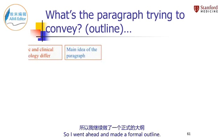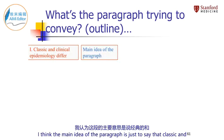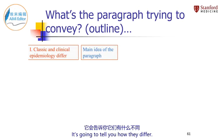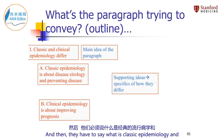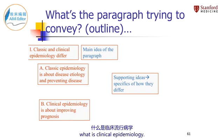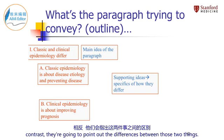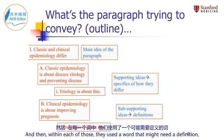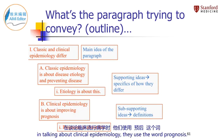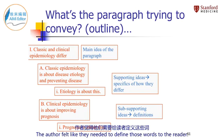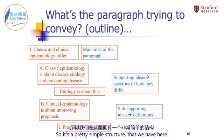I went ahead and made a formal outline. I think the main idea of the paragraph is just to say that classic and clinical epidemiology differ and to tell you how they differ. Then they have to say what is classic epidemiology and what is clinical epidemiology — it's a compare-contrast, pointing out the differences between those two things. Within each of those, they used a word that might need a definition. In talking about classic epidemiology, they used the word etiology. In talking about clinical epidemiology, they used the word prognosis. The author felt like they needed to define those words for the reader. So it's a pretty simple structure.